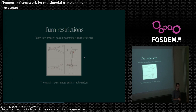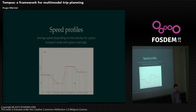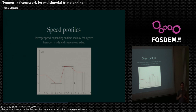Turn restrictions use a very generic concept. It can handle complex restrictions — for instance, a U-turn that passes through several road edges. Internally it uses an automaton, a state machine, for each restriction. For speed profiles, you can model daily speed profiles on road edges and the engine will take them into account — for example, if a road is very congested at lunchtime.